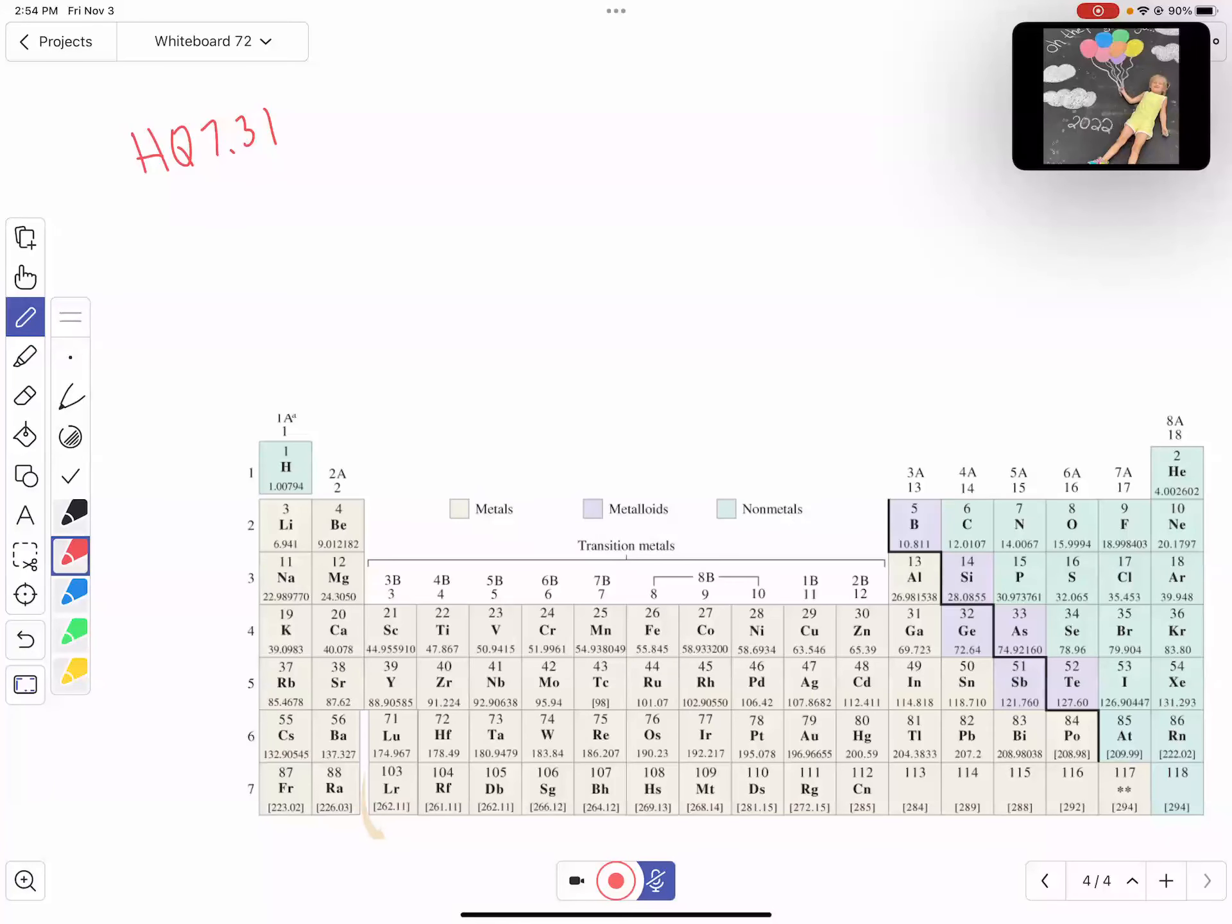So homework question 31 asks, how many unpaired electrons does the ground state of sulfur have?